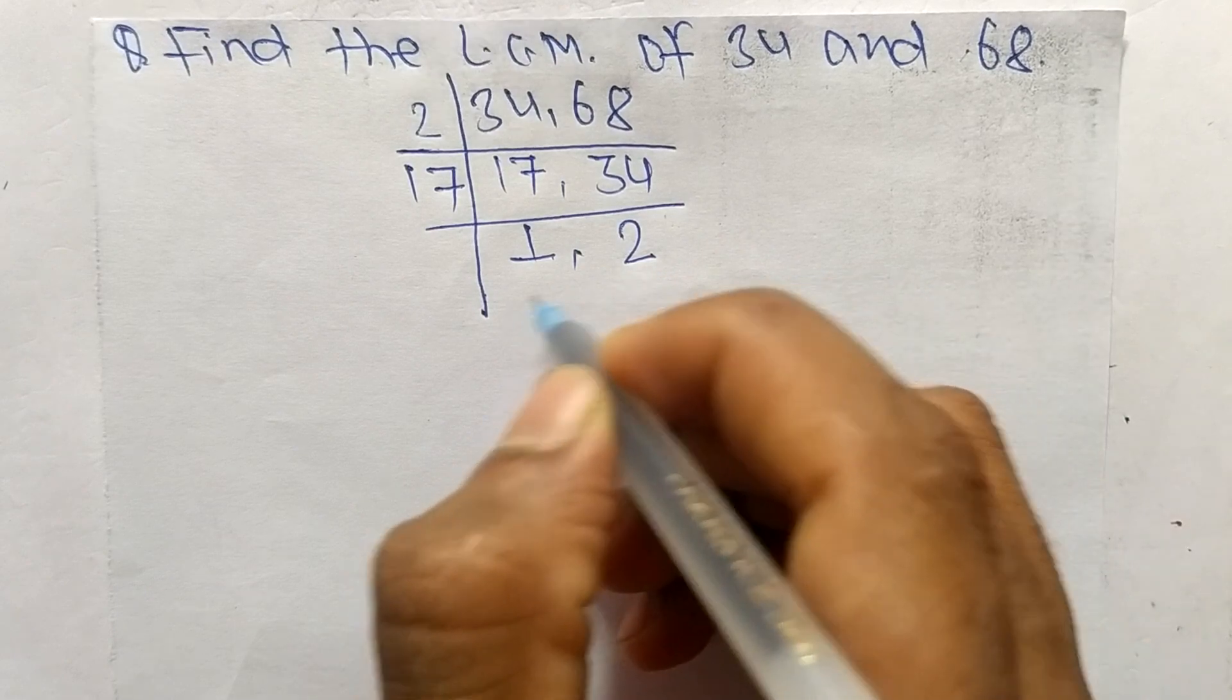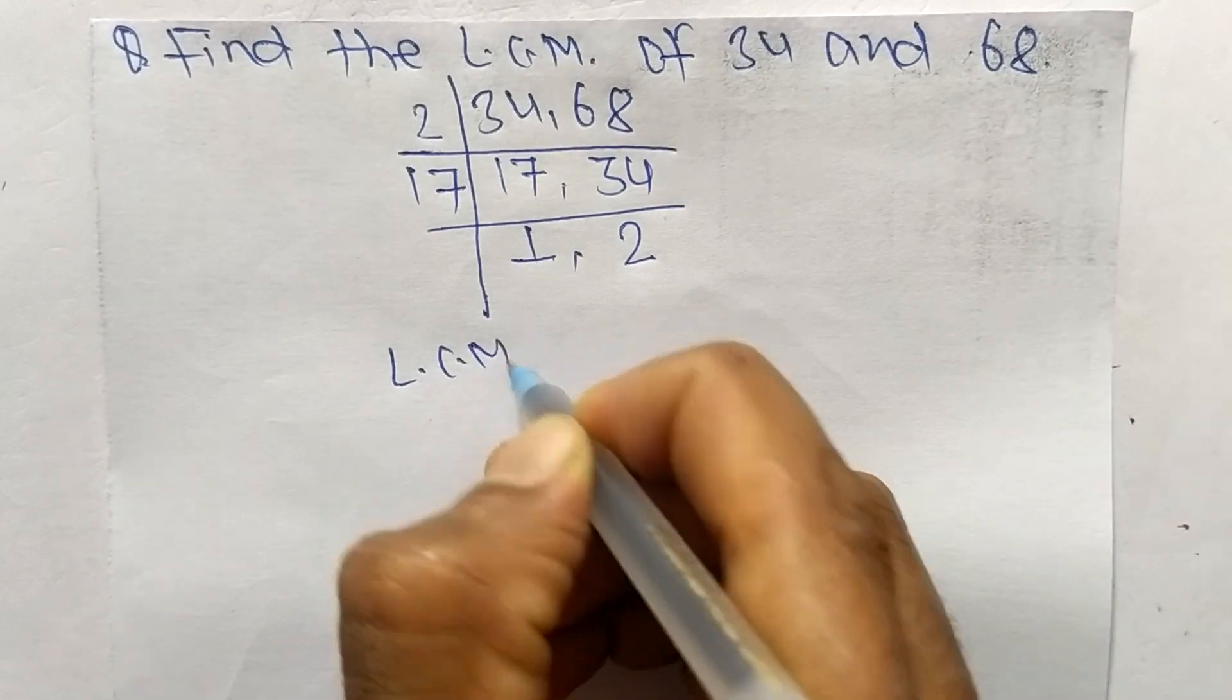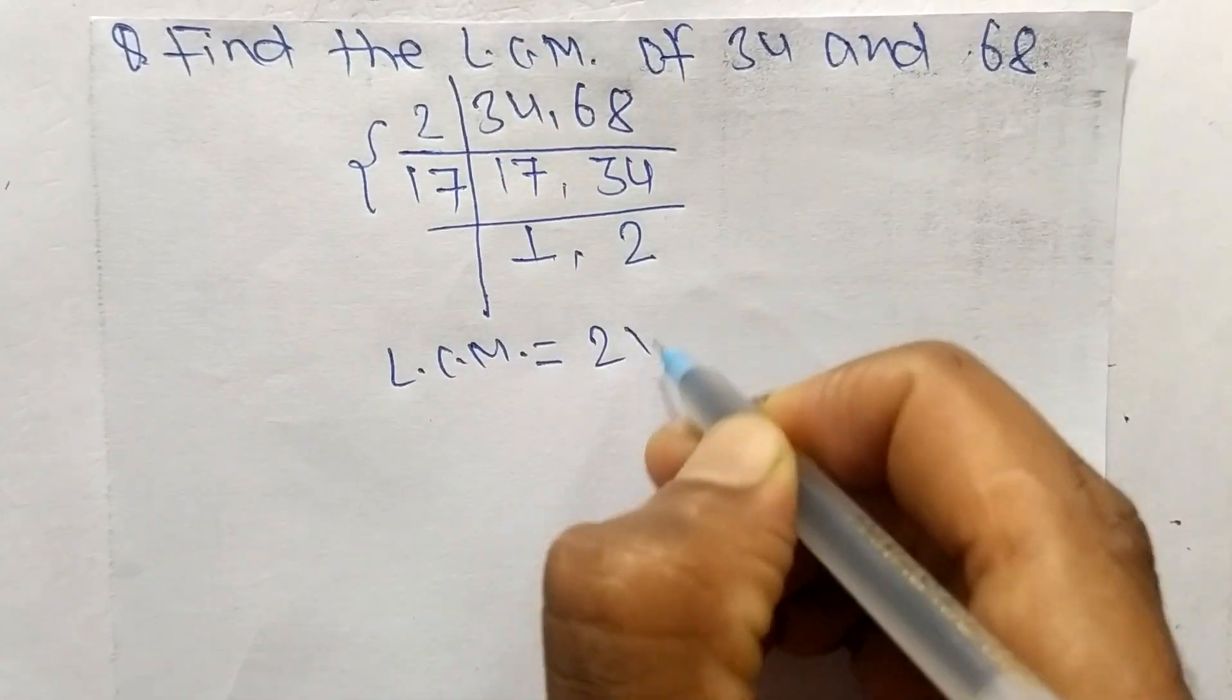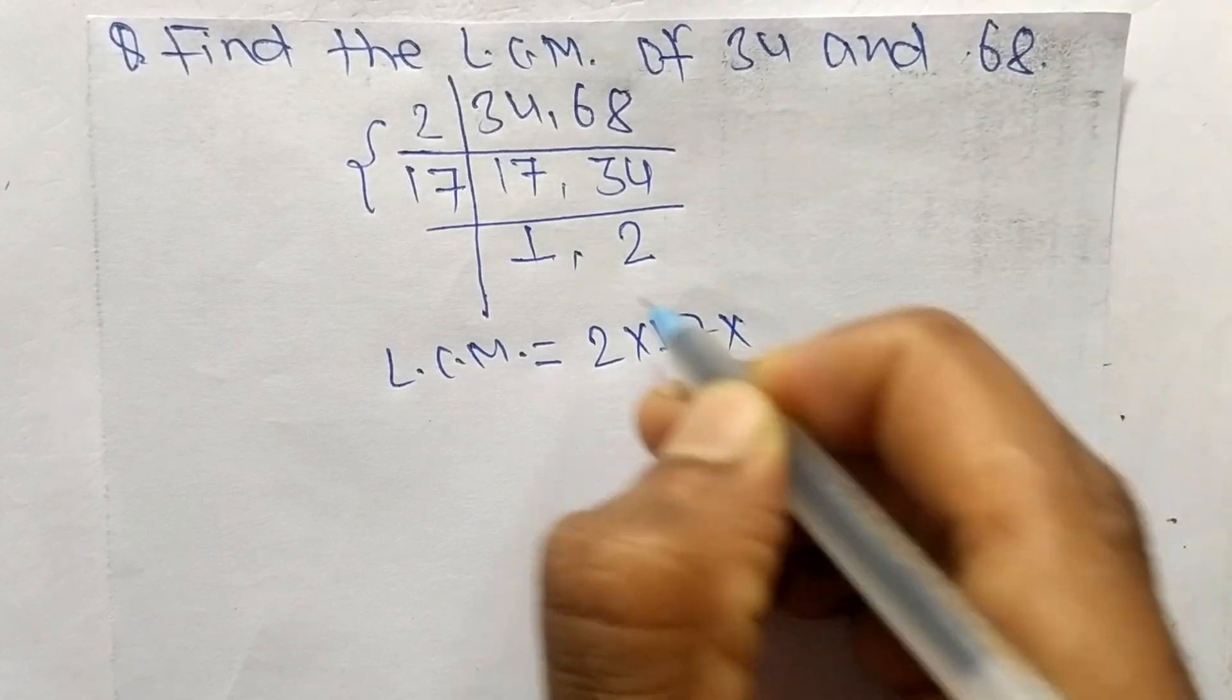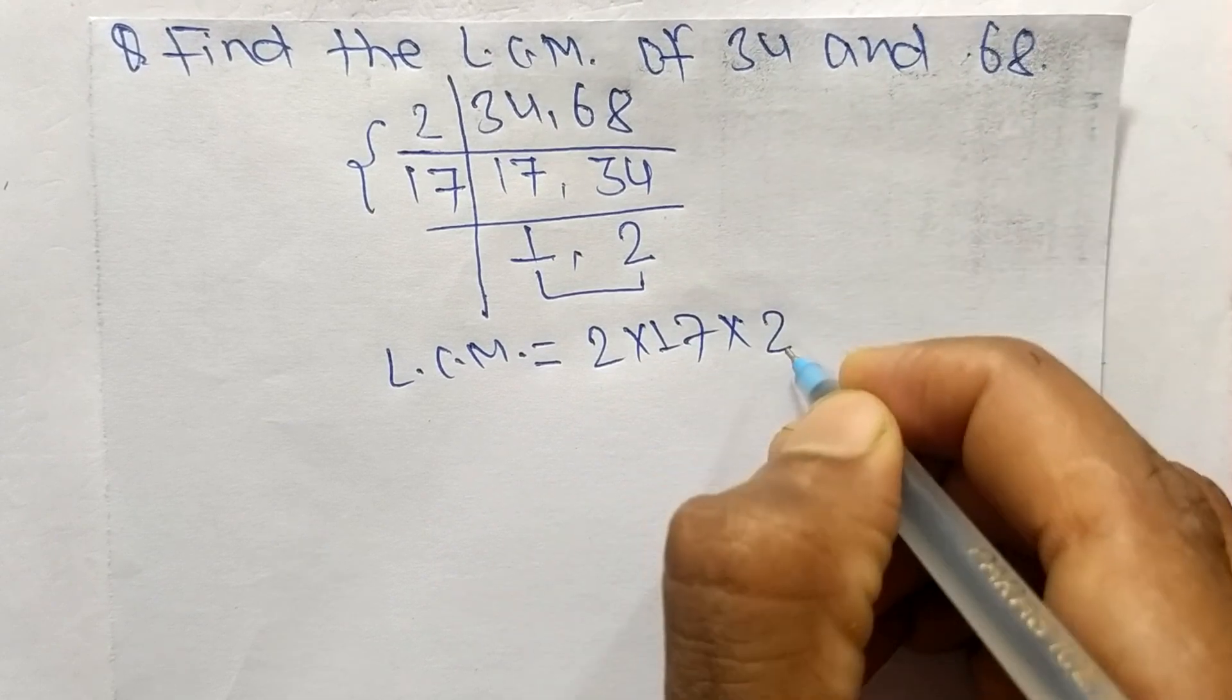These are not exactly divisible by the same number, so the LCM is equal to: from the divisors we have 2 and 17, and from the final quotients we have 1 and 2. We take only 2 and neglect 1.